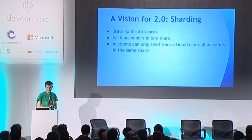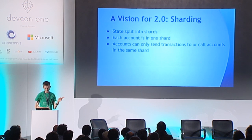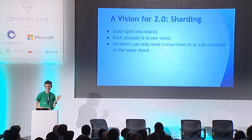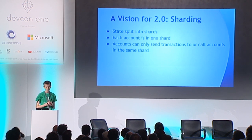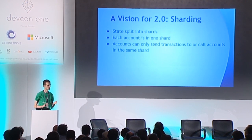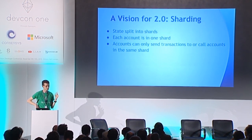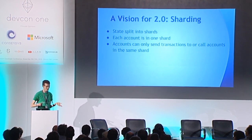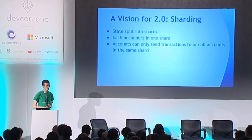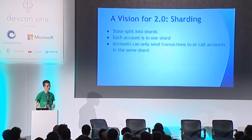State is split into different shards. Each account is only in one shard. In the simplest case, accounts can only send transactions to or call accounts within the same shard. You sort of split Ethereum up into a few thousand different islands, and if you want to do stuff that interoperates between islands, you have to figure out some sort of super-protocol way to do it.